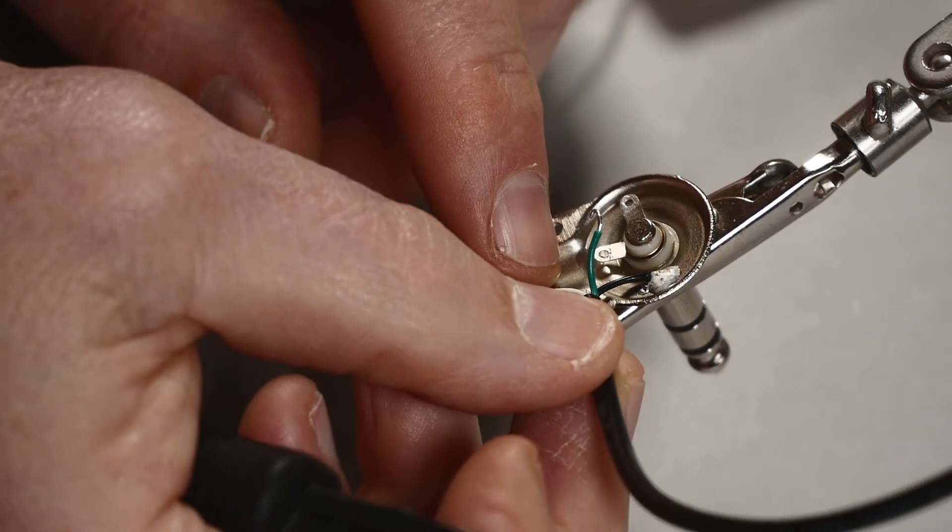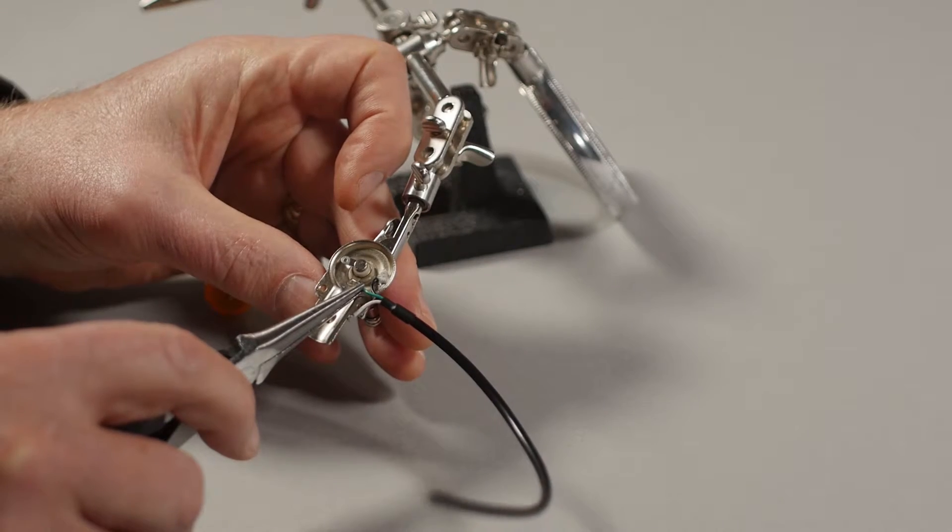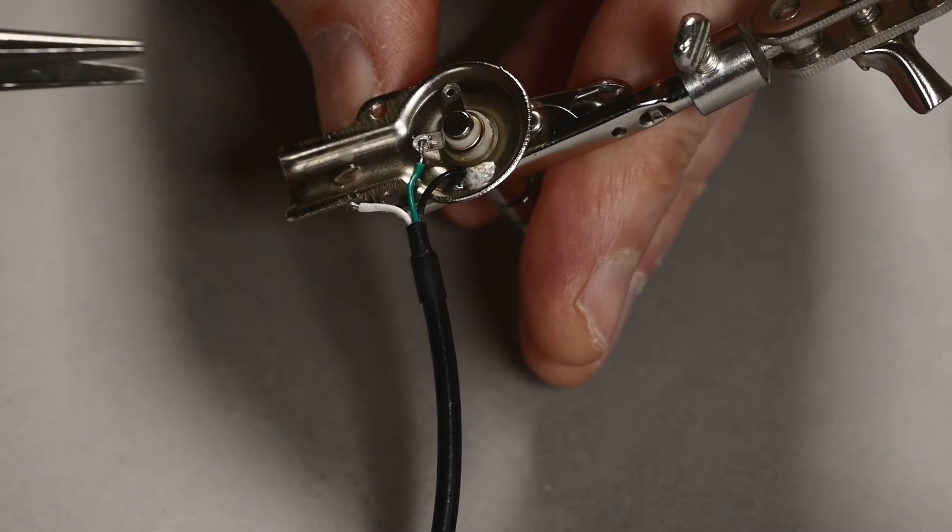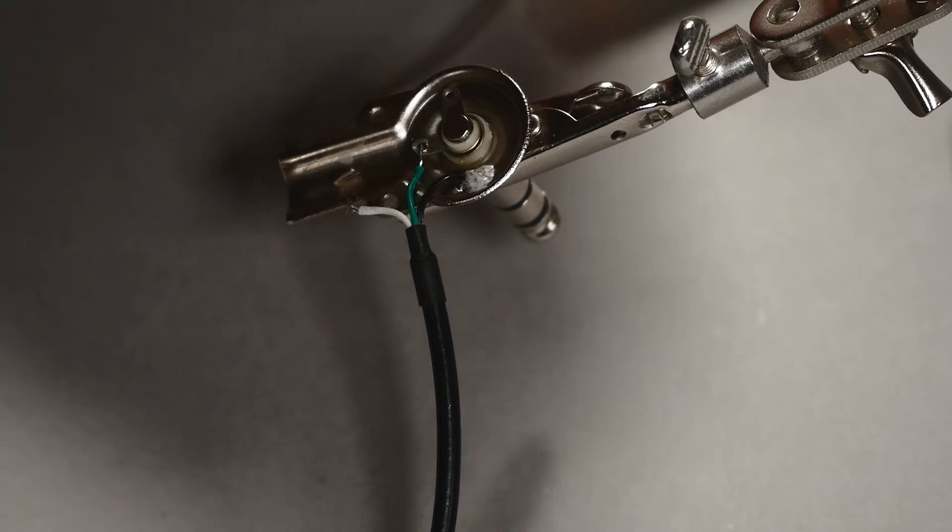Crimp the first pre-tinned wire onto the middle pierced terminal. The wire must pass through the eye and bend at least 90 degrees but shouldn't overlap itself.